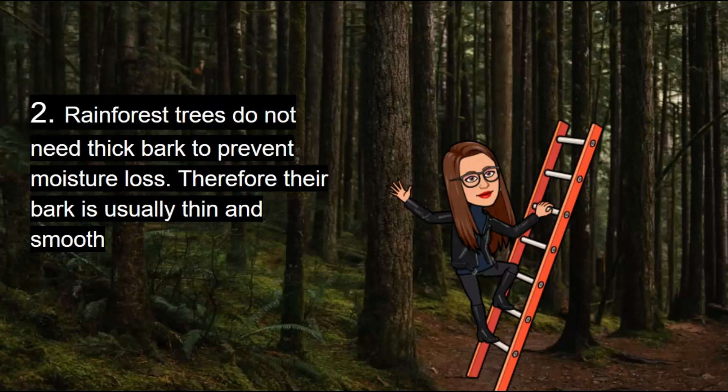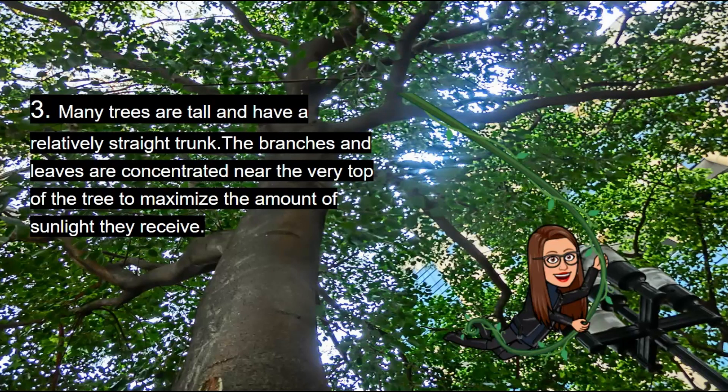Rainforest trees do not need thick bark to prevent moisture loss like trees in other areas. Therefore, their bark is usually thin and smooth. They are usually slender and only big enough to accommodate how tall the trees are, so in the rainforest you will find a lot of thin and smooth-barked trees. Many trees are tall and have a relatively straight trunk, with branches and leaves concentrated near the very top of the tree to maximize the amount of sunlight they receive.